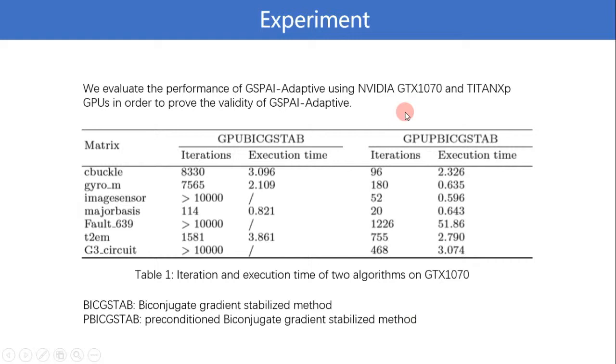Finally, we evaluate the performance of GSPAI-Adaptive using NVIDIA GTX 1070 and Titan XP GPUs in order to prove the validity of GSPAI-Adaptive. From Table 1, we can observe that without preconditioner, for some matrices, GPU BiCGSTAB method cannot converge in 10,000 iterations.